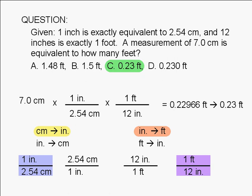We only keep two significant digits in the answer because the original measurement, 7.0 centimeters, has only two significant figures. All the numbers in the conversion factors are exact and have no uncertainty.